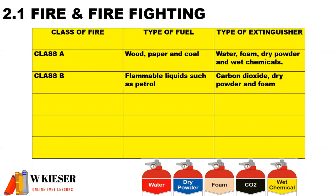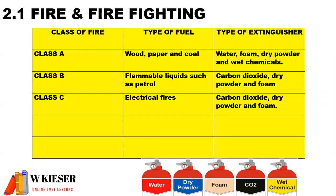A class B fire is started from flammable liquids such as petrol, and the extinguisher we could use is carbon dioxide, dry powder, and foam. A class C fire is started from an electrical fire, and here we can use carbon dioxide, dry powder, and foam.